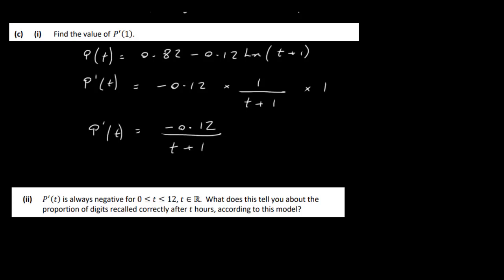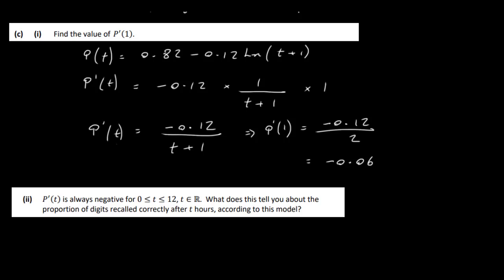Now we put in t = 1 to find p′(1): it's −0.12 / (1 + 1) = −0.12 / 2 = −0.06. This tells us the proportion of digits recalled is decreasing, and after 1 hour it is decreasing at a rate of 0.06.